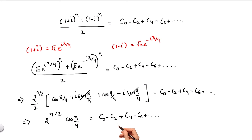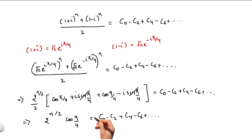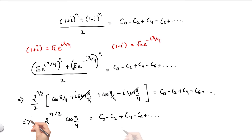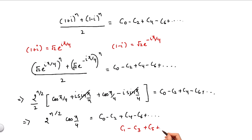So basically, the sum of the even binomial coefficients with alternate plus and minus signs is given as 2^(n/2)·cos(nπ/4). In a similar way, we can find the sum of the odd binomial coefficients with alternate plus and minus signs, that is c1 − c3 + c5 and so on. This is left as an exercise for the student to accomplish.